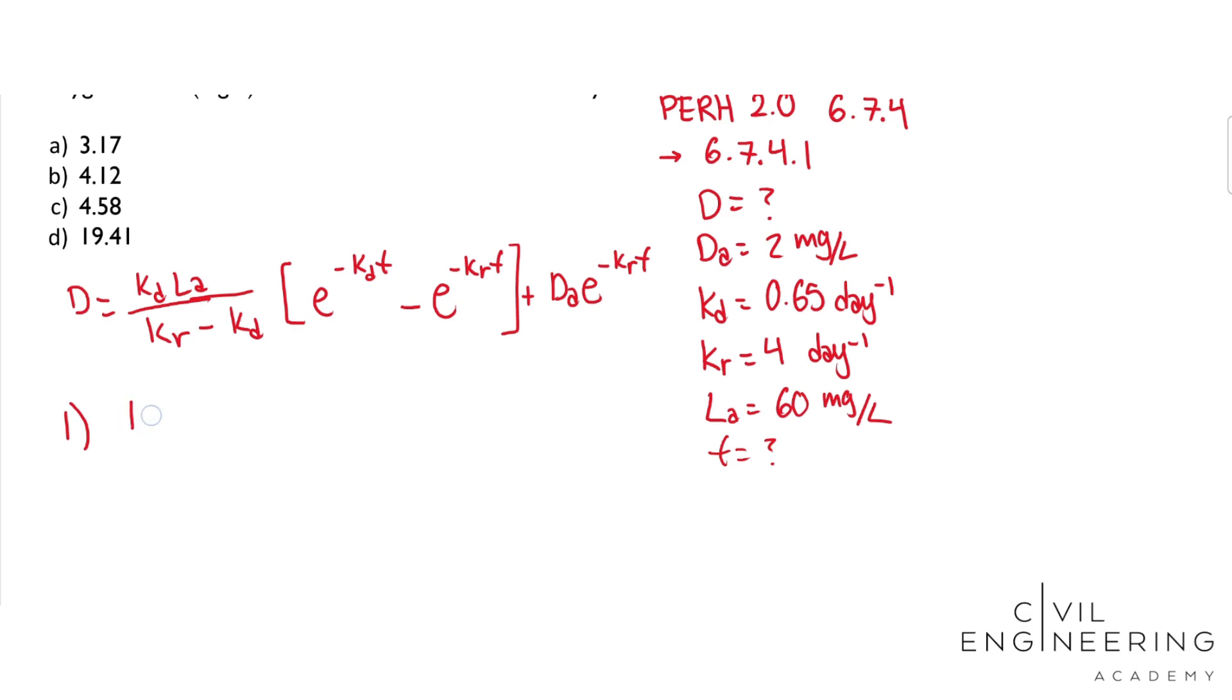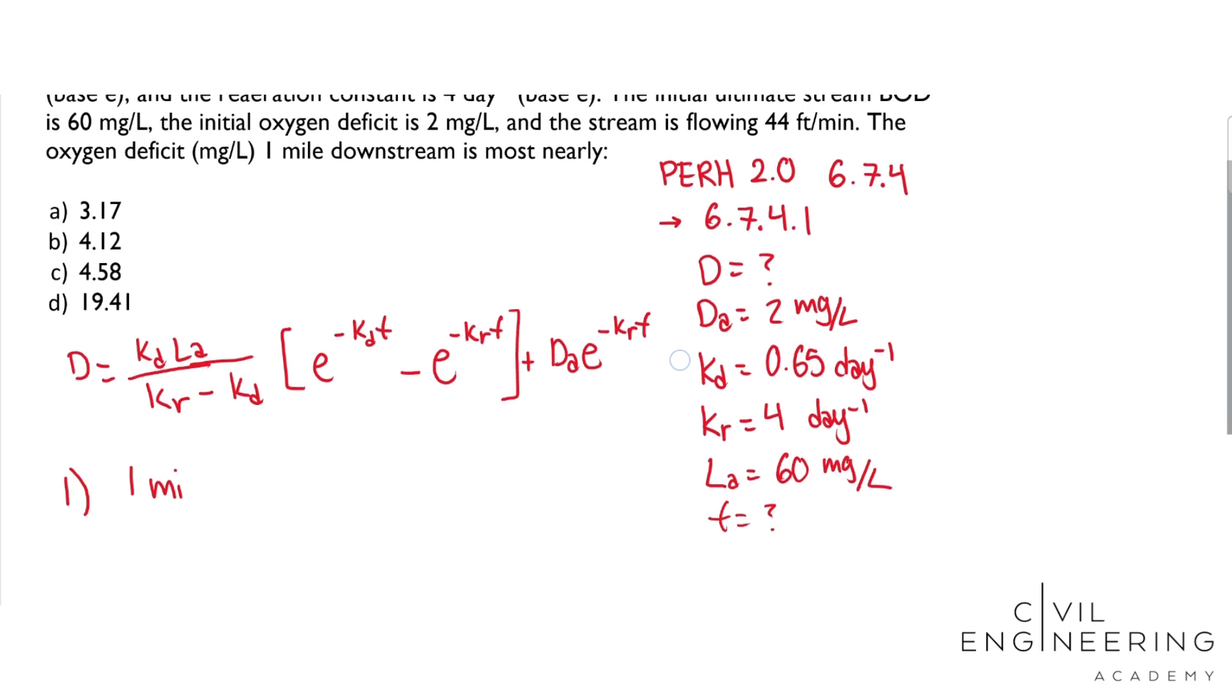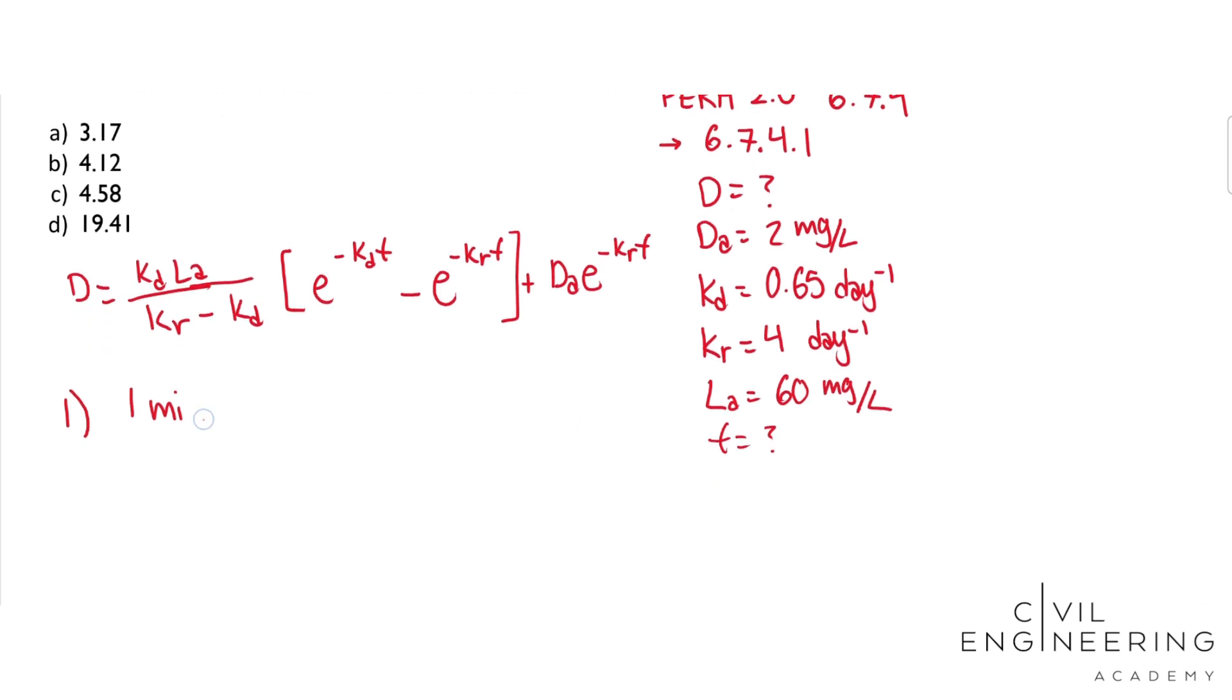We were given one mile and we were given 44 feet per minute. So let's just divide one mile. We'll flip this 44 feet per minute, because we need to find time, and then we'll convert miles to feet, and that conversion is 5280 feet per mile. And you can just find that in your section 1.2 of the reference handbook, and we want the time in days, because these other constants are in day to the negative one, and we're going to want that to cancel out. So we'll do 60 minutes per hour and 24 hours per day.